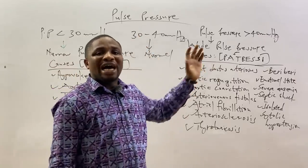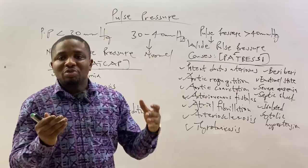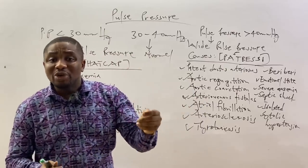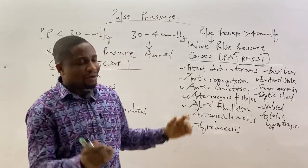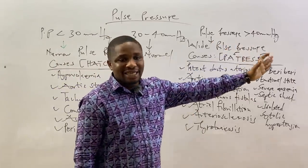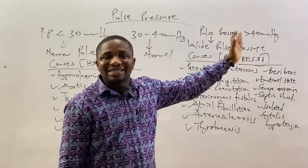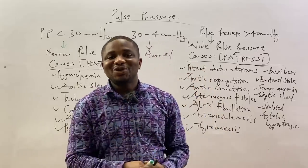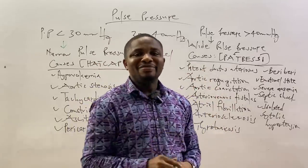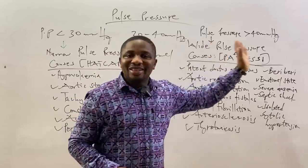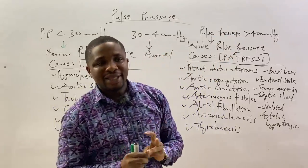For the causes of wide pulse pressure — when the pulse pressure is greater than 40 mmHg, the upper limit of normal — we use the acronym PATH-B-ESS-I. P stands for patent ductus arteriosus. A — and there are five of them — starting with aortic regurgitation, which is considered the most common cause of wide pulse pressure.